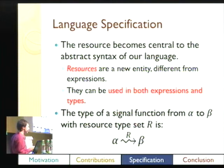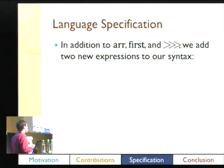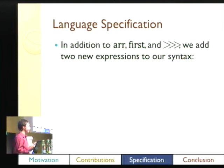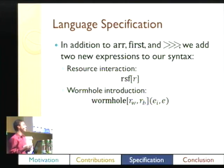The type of a signal function becomes: a signal function from alpha to beta with resources R that it uses. We add to our pure Haskell some arrow stuff like `arr`, `first`, and compose — we don't need loop. We also add resource interaction, which will be the expression that uses a resource, and wormhole introduction, which introduces two new resources for an inner body.